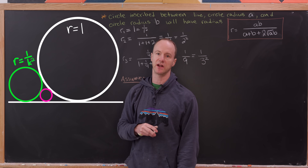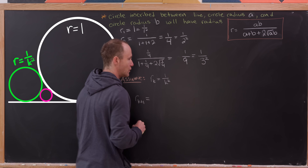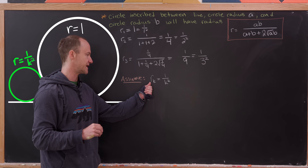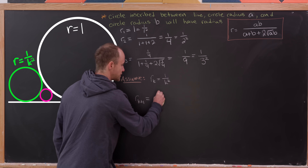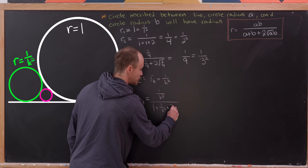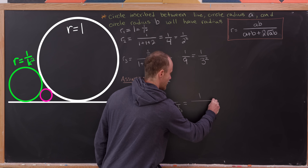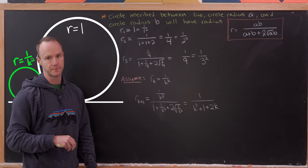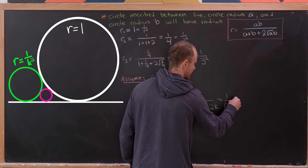For the inductive step, R_{k+1} is inscribed between a straight line, a circle of radius 1, and a circle of radius 1/k². Applying our formula: (1/k²) / (1 + 1/k² + 2 · (1/k)). Multiplying through by k², the denominator becomes k² + 1 + 2k. Factoring, that's (k + 1)², so R_{k+1} = 1/(k+1)². The induction is complete.